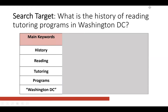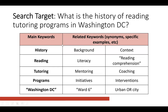For this specific target — part of that big project — we want to know the history of reading tutoring programs in DC. The first step is to take the main keywords from this search target and list them out in one column. So we've got history, reading, tutoring, programs, and Washington DC. These are the main ideas that are part of this search target. We're also going to put in some related keywords. History — a synonym might be background or context. The idea of reading could be expressed as literacy, or even as the phrase "reading comprehension." Note that I've put quotation marks there because these are two words I want to search as a phrase — that's called a key phrase.